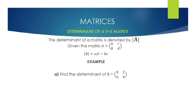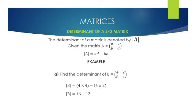For example, when we have matrix B as shown and we are asked to find the determinant, we simply multiply 4 by 4 and subtract 6 multiplied by 2. So the determinant of B will be 16 minus 12, and hence our determinant will be 4.